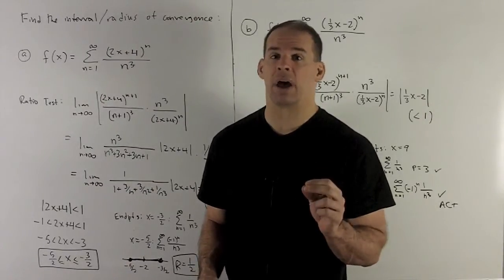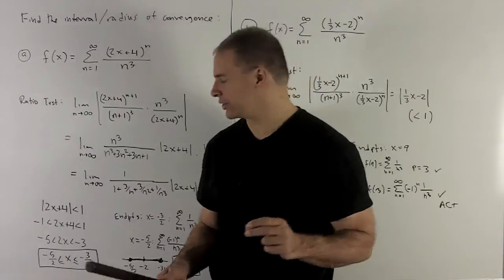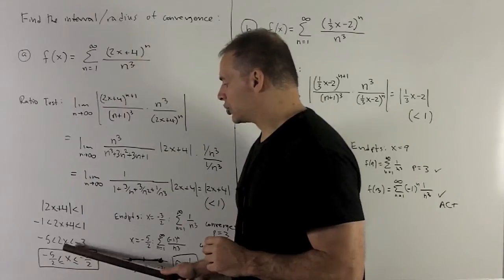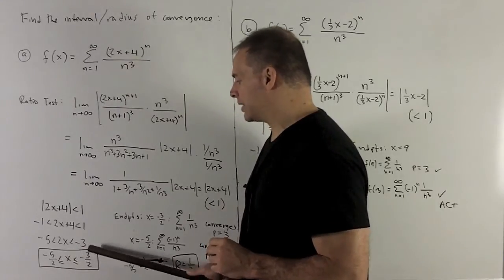If you used a negative number, then you'd have to switch all the directions. So it's going to leave me with minus 5 halves, strictly less than x, strictly less than minus 3 halves.